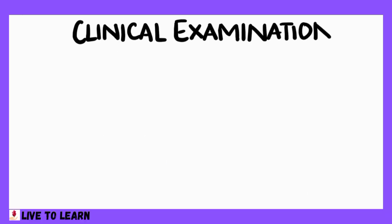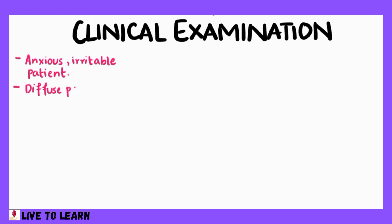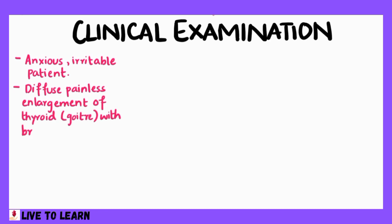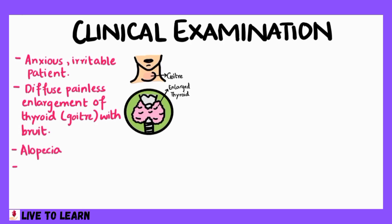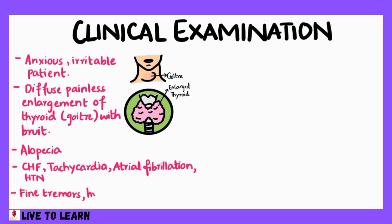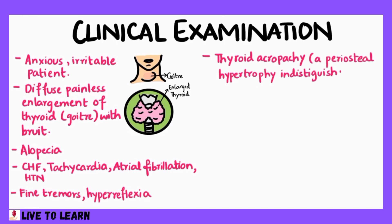On examination, the patient will appear anxious and irritable. There may be a diffuse painless enlargement of the thyroid, also known as goiter, with a bruit, which is basically an audible vascular sound associated with turbulent flow. Clinical findings may also include alopecia, congestive heart failure, tachycardia, atrial fibrillation, hypertension, fine tremors, hyperreflexia, and thyroid acropachy, which is a periosteal hypertrophy indistinguishable from finger clubbing.